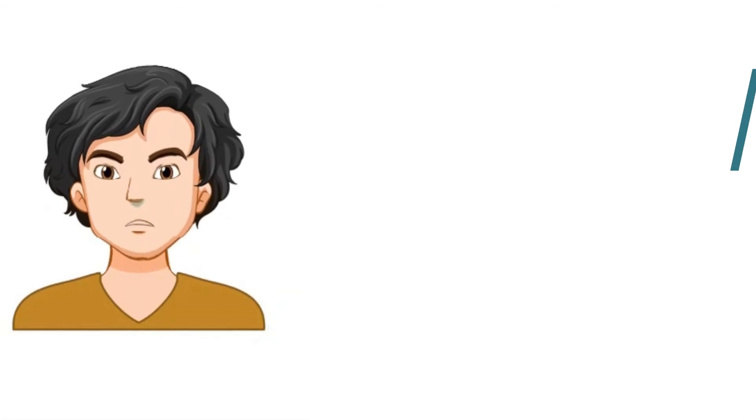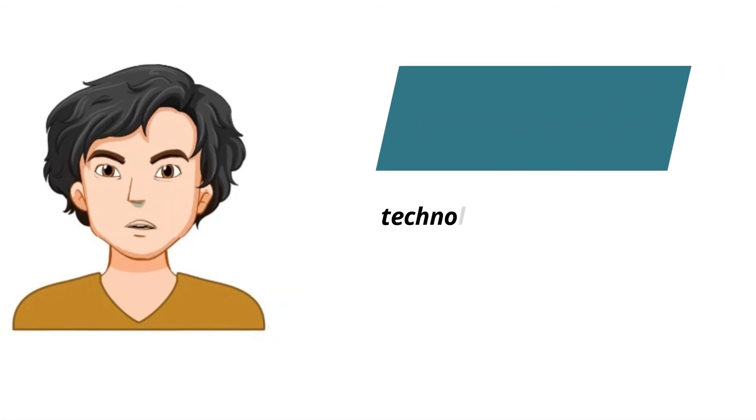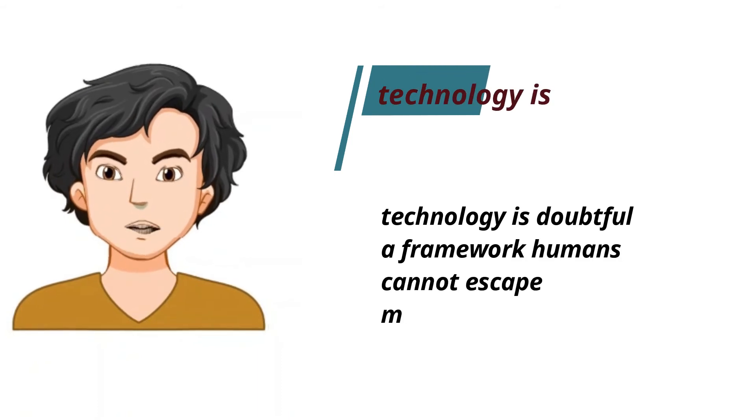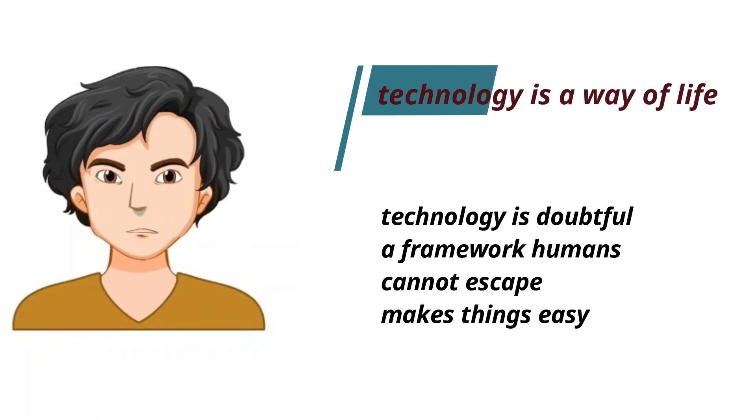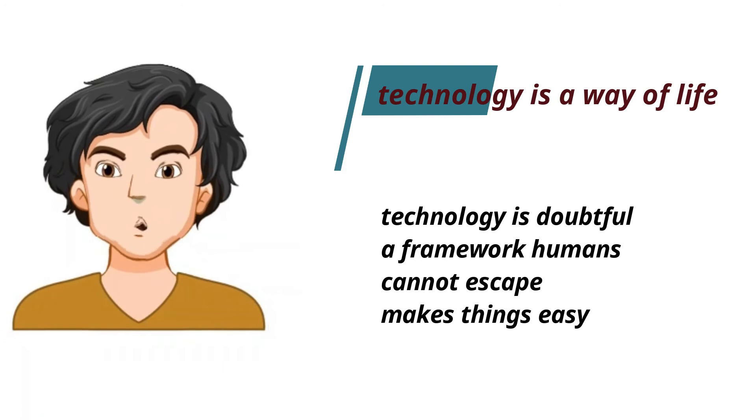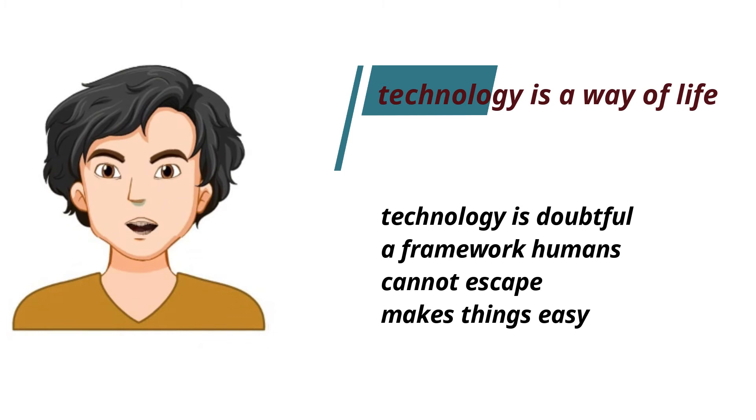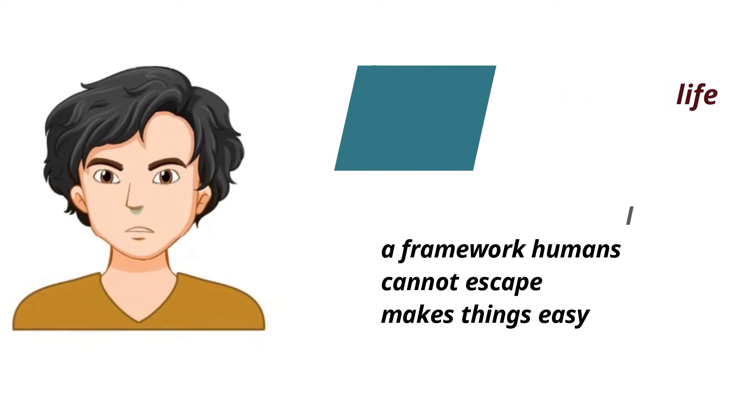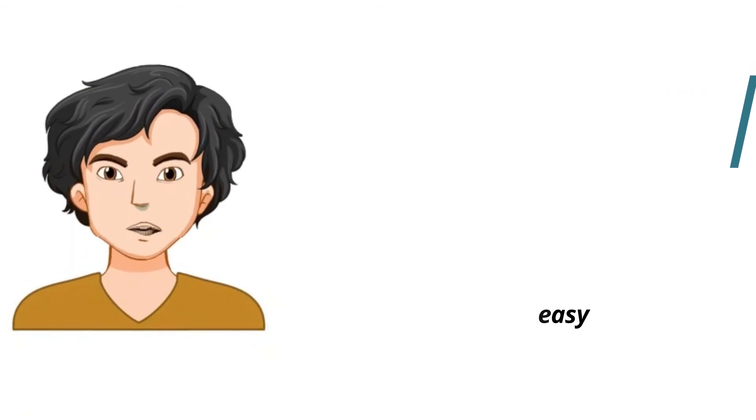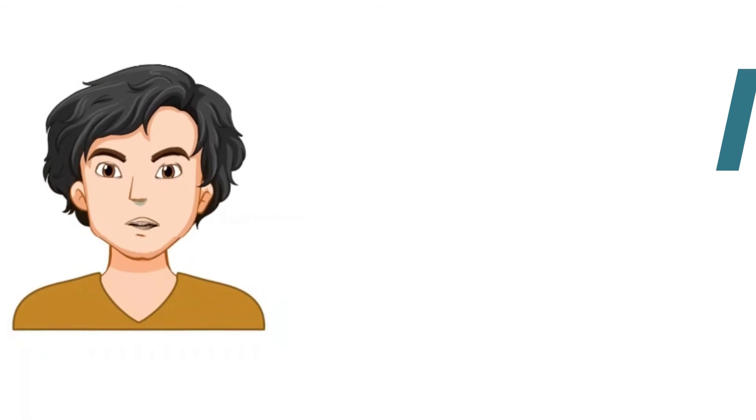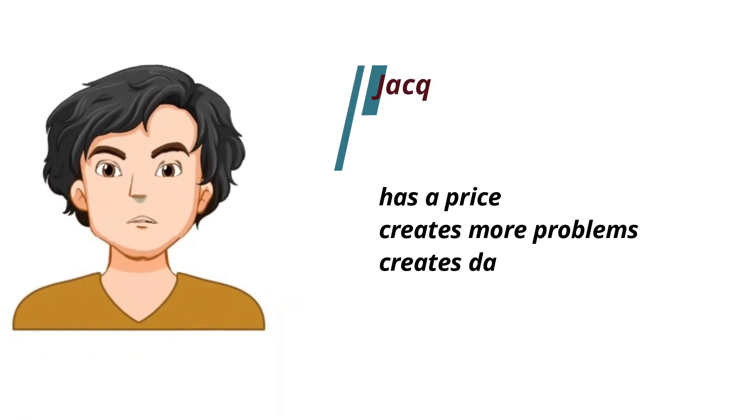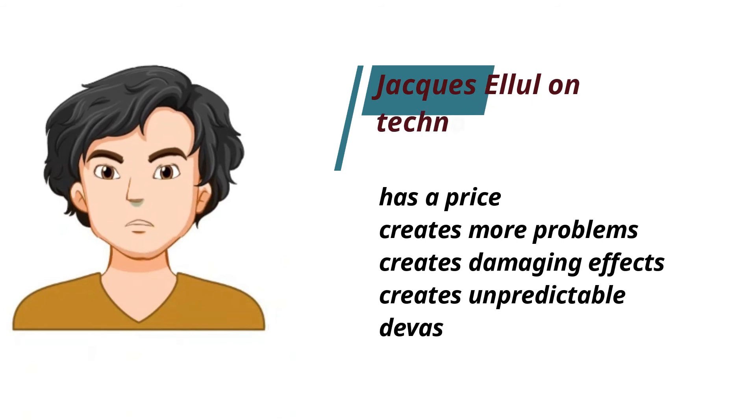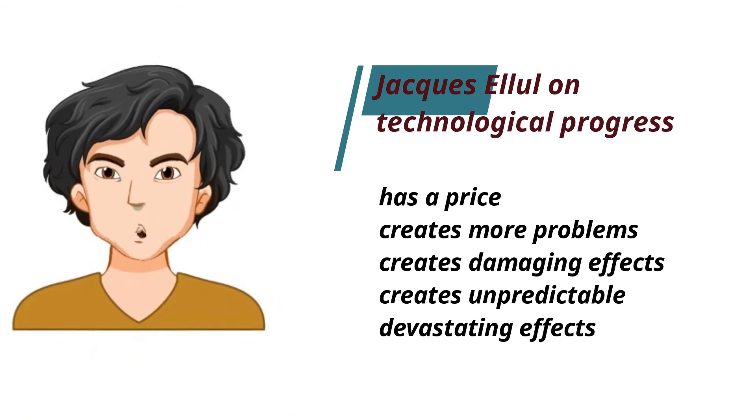Technological pessimism holds that technology is progressive and beneficial, but it is also doubtful in many ways. This views technology as a way of life. Technology has become a framework which humans cannot escape. It has introduced ways on how to make things easy. Jacques Ellul, a French philosopher who is an advocate of this view, has the following pessimistic arguments: